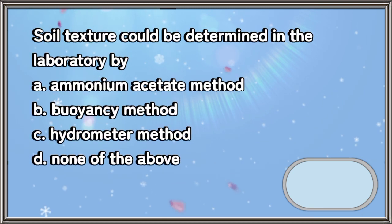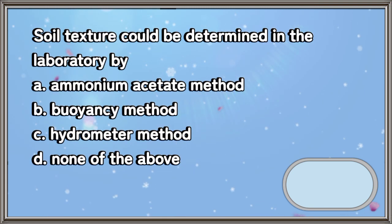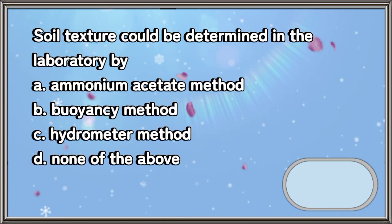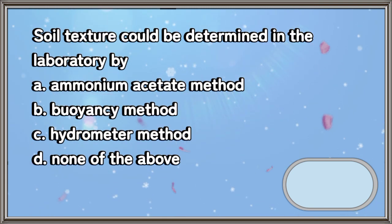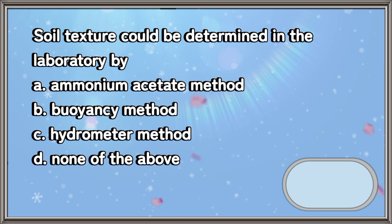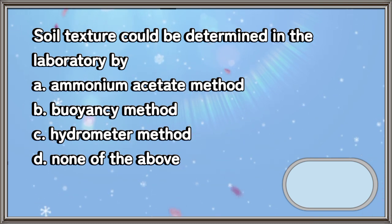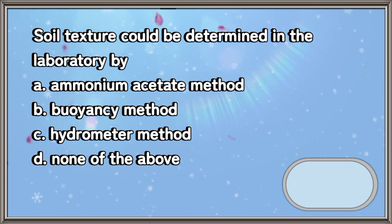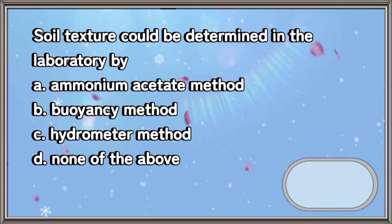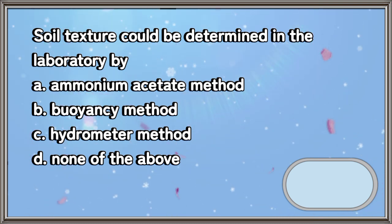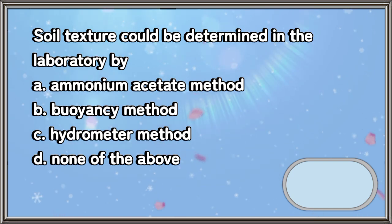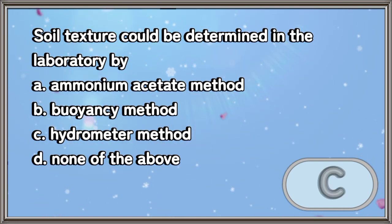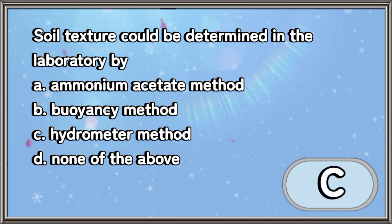Soil texture could be determined in the laboratory by: A. Ammonium acetate method. B. Buoyancy method. C. Hydrometer method. D. None of the above. The answer is letter C.